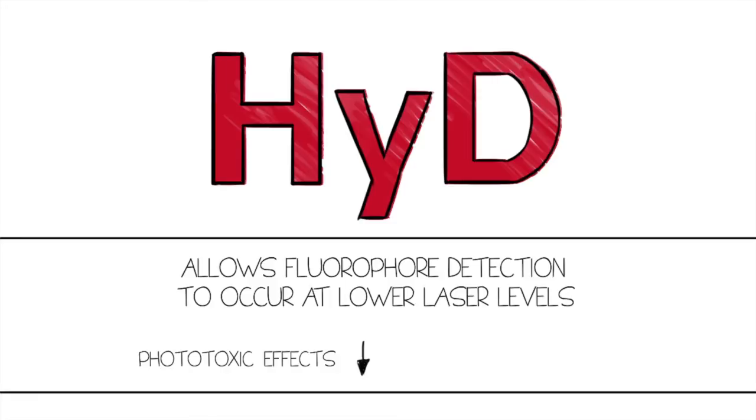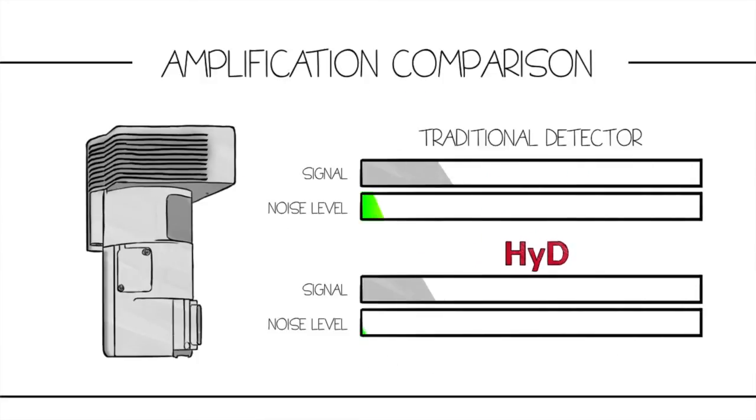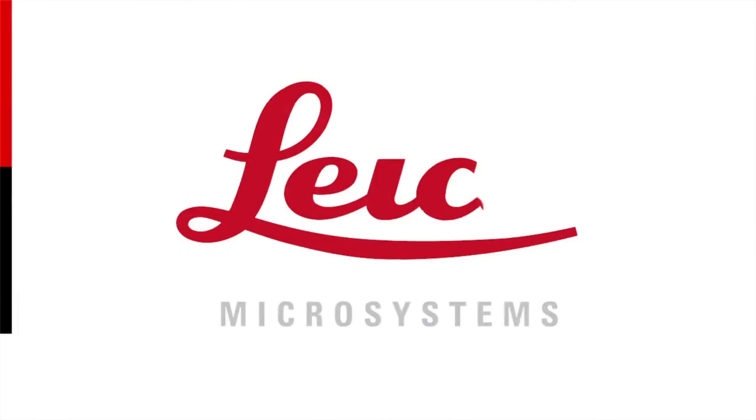Reducing phototoxic effects and prolonging cell viability. To get more from your samples than ever before, the Hi-D will collect your specimen's fluorescent signal in less time and with less laser power, allowing you to work with your samples longer. With the Leica Hi-D, you will see more with less.